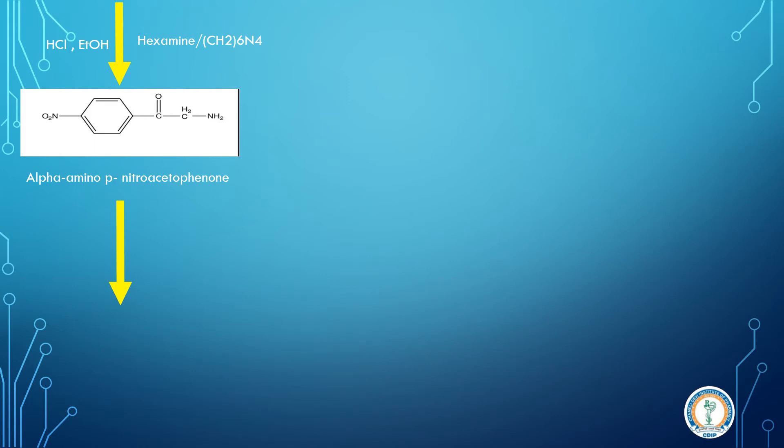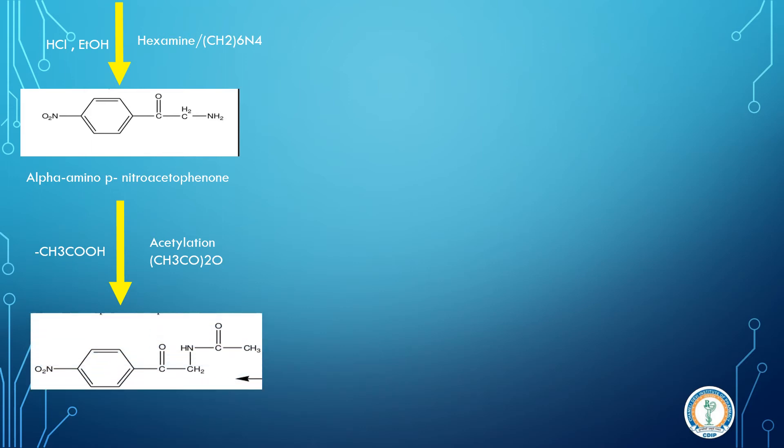Moving further, we have to do addition of acetyl group by acetylation. So (CH3CO)2O, this is acetic acid anhydride. A new intermediate will be formed. What happens, the hydrogen of NH2 will be replaced and form CH3CO, and HCl will be removed. Then what we get is paranitroacetamidoacetophenol.